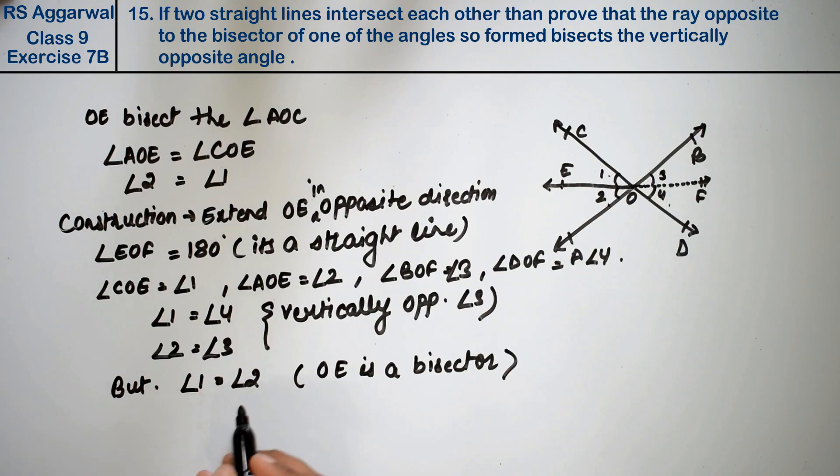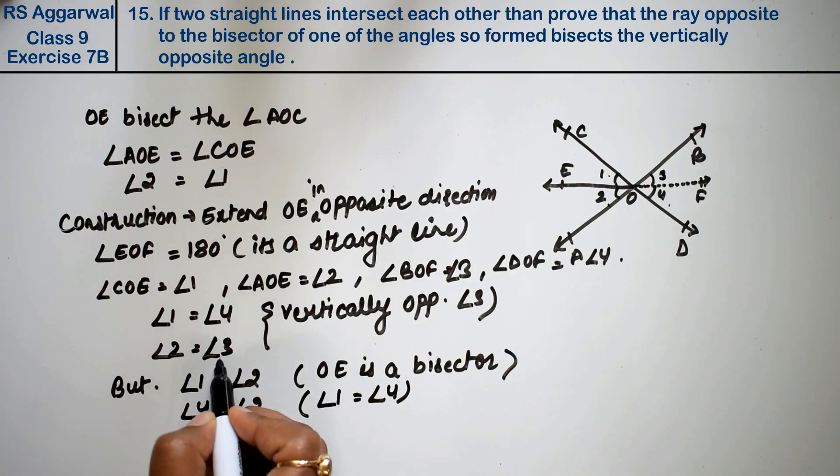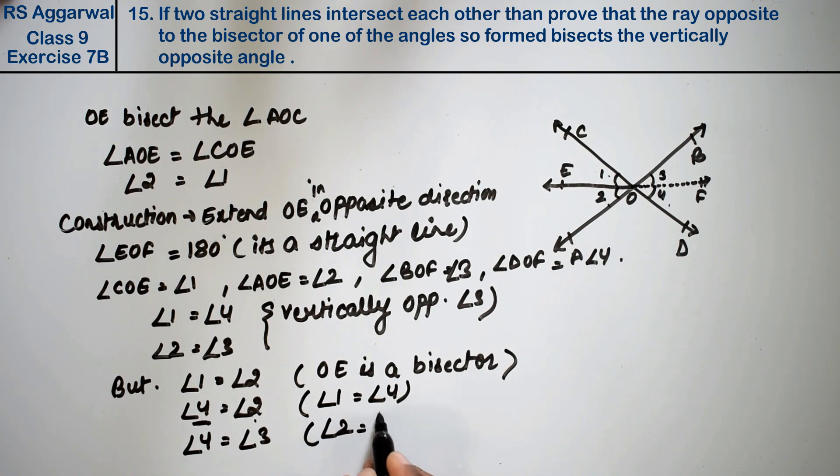Now see, angle 1 was equal to angle 2. Angle 1 equals angle 4, and angle 2 equals angle 3, right? So now, angle 1 was equal to angle 2. If I replace angle 1 with angle 4, then angle 2 equals angle 4. Now if I replace angle 2 with angle 3, angle 4 equals angle 3, because angle 2 is equal to angle 3.